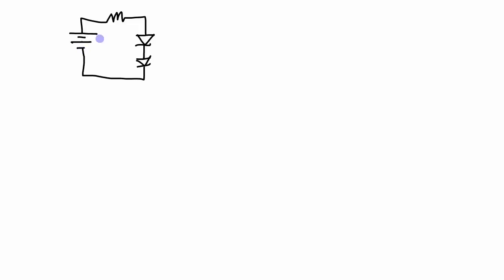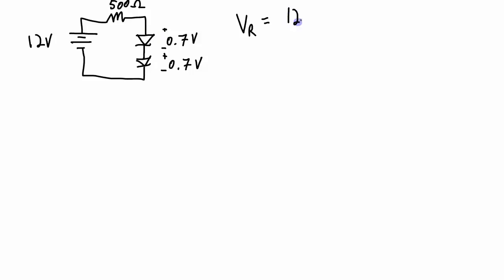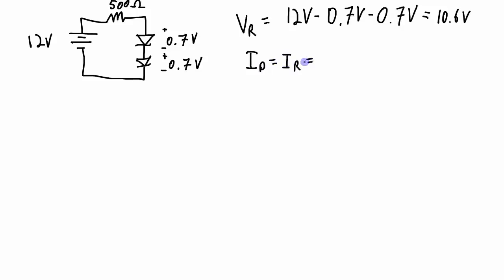What about a circuit with two diodes, both in the forward bias direction? With a voltage source, a resistor, and two silicon diodes in series — each dropping 0.7 volts — and still using the 12-volt source and 500-ohm resistor, the voltage across the resistor is 12 volts minus 0.7 volts for the first diode and 0.7 volts for the second diode, giving 10.6 volts. Using Ohm's law, the current is 10.6 volts divided by 500 ohms, which is 21.2 milliamps.